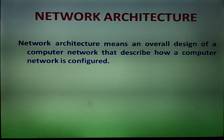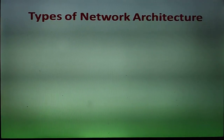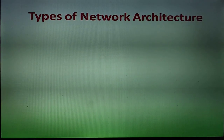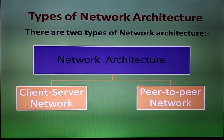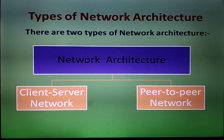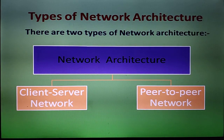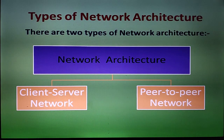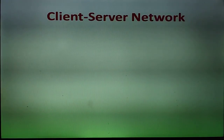Computer network architecture tells us how computers are designed in a network. There are two types of network architecture: the first is a client-server network, and the second is a peer-to-peer network.